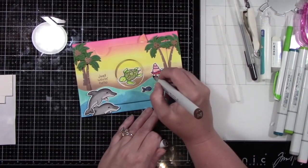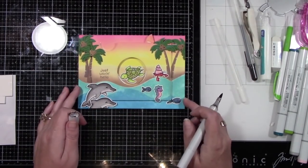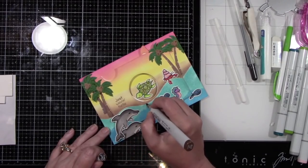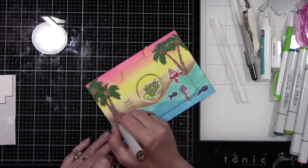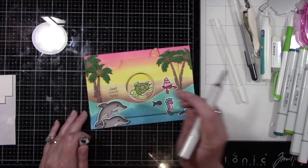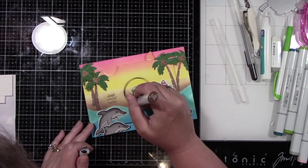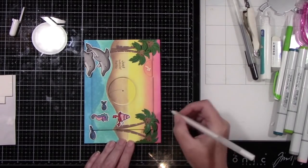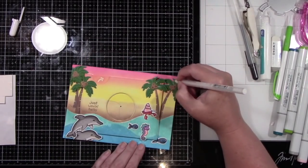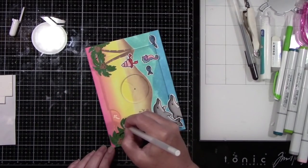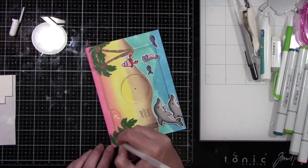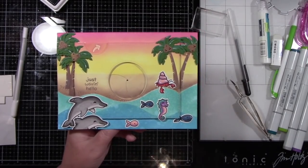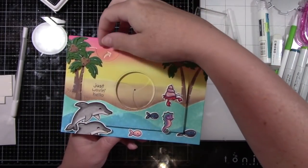Now I'm taking the Copic marker in E57 and adding a few little dots in the sand. I like to add this it gives the sand dimension and texture and I think it really adds some interest to your card. So I'm going to finish that up. Here I'm adding a little bit of the highlights to the palm fronds at first I wasn't sure if I was going to but I felt like it just needed a little bit. So I'm just going to finish that up nice little details makes all the difference.